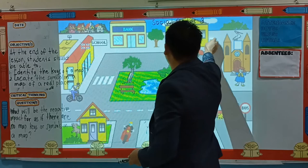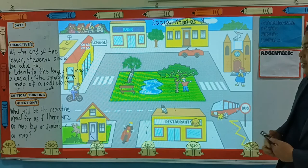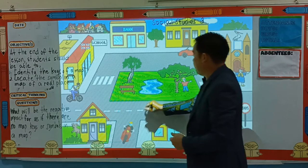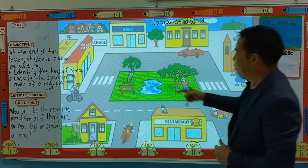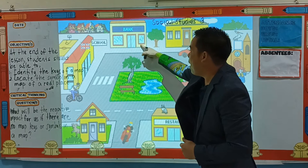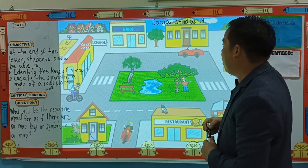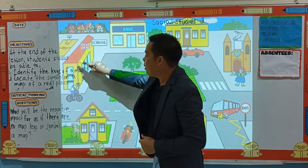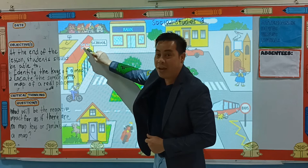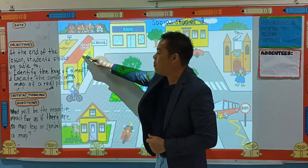Now let us try to identify what are the map keys used in this map. By that, I'm talking about what are the map symbols. I want to go to the bank - so I have here the bank. This is a bank. What about the school? Very good. So the map maker or the cartographer uses a building with a flag on the top, or on the roof of the building - so it represents a school.